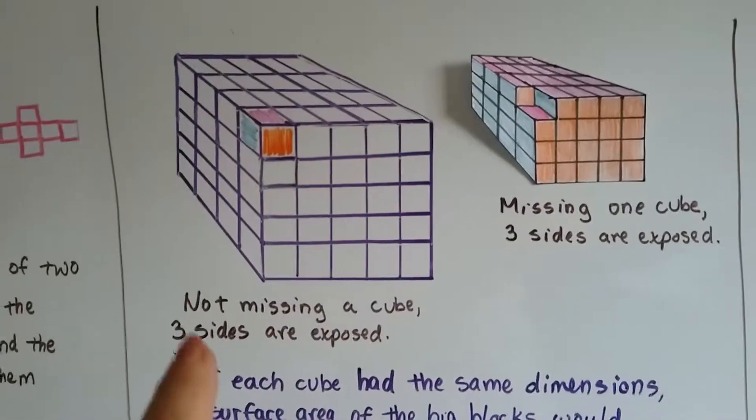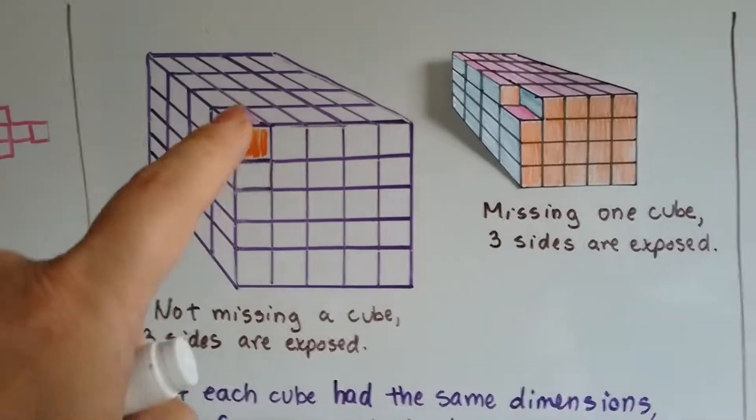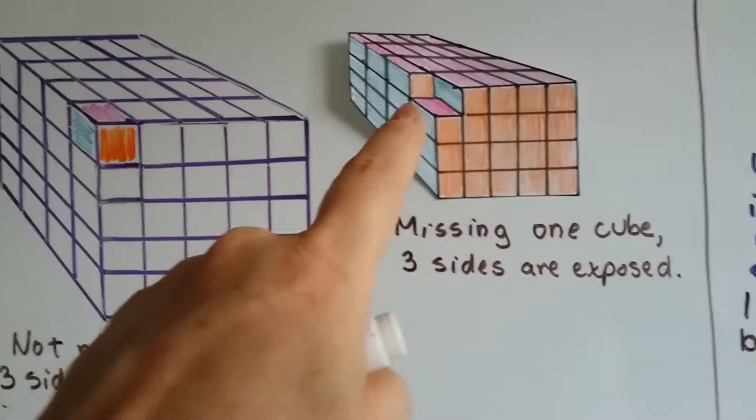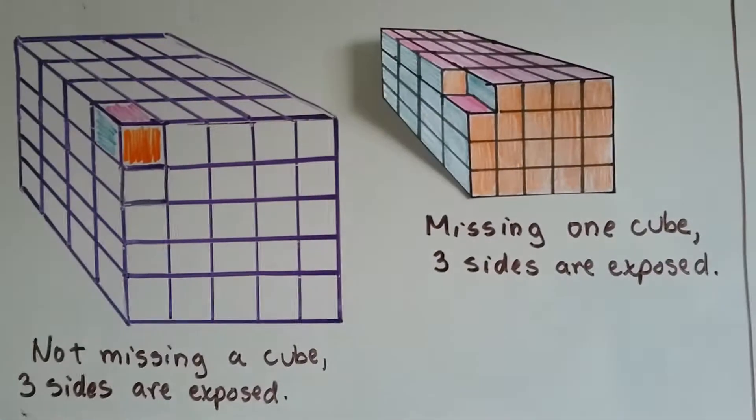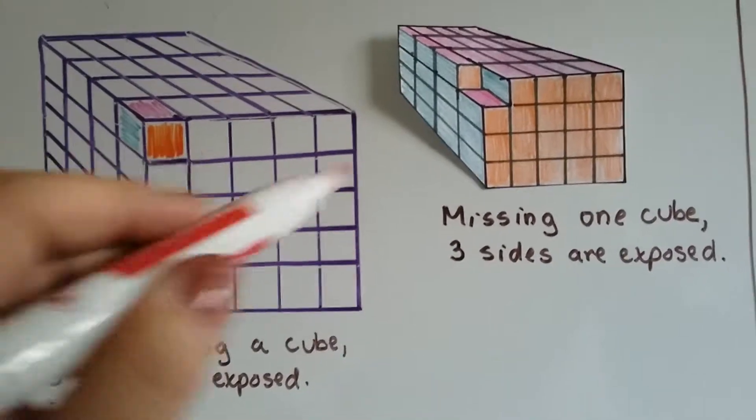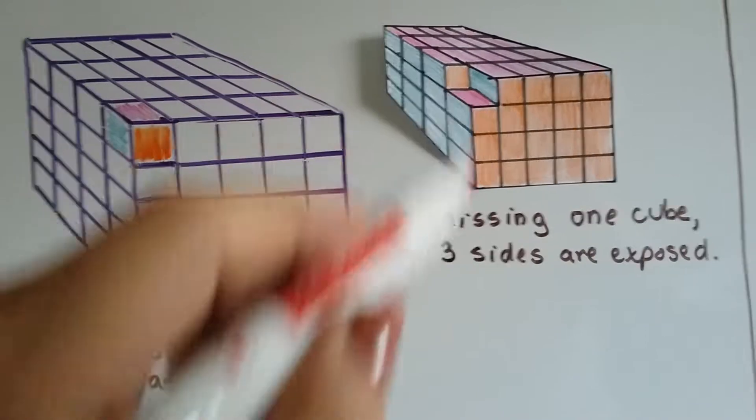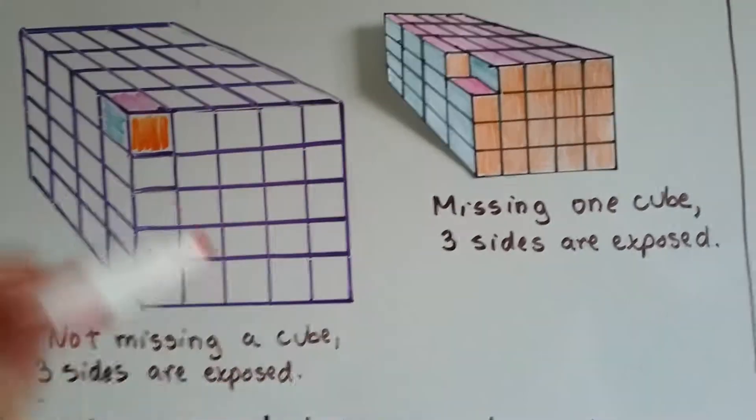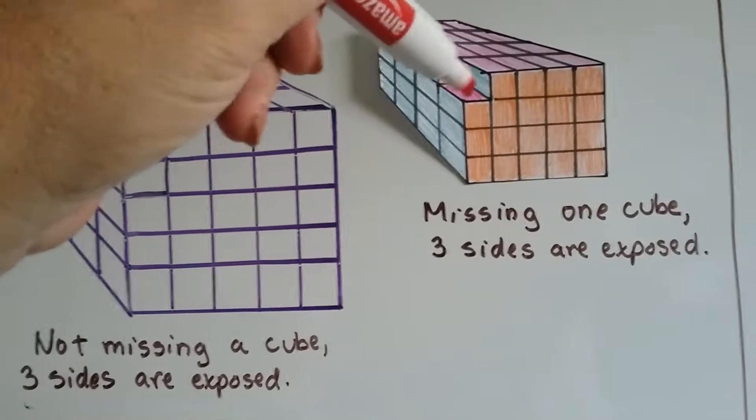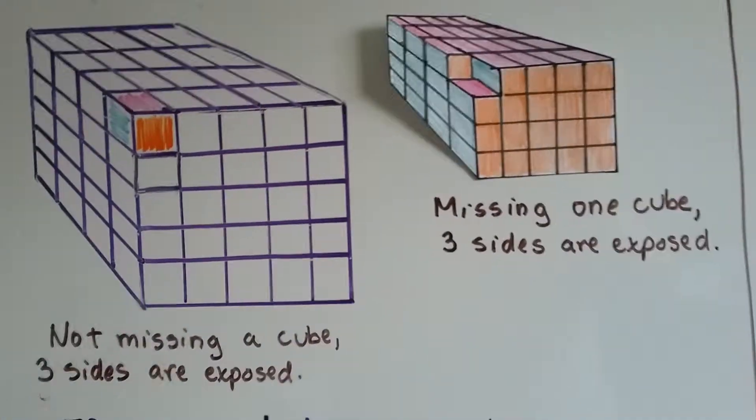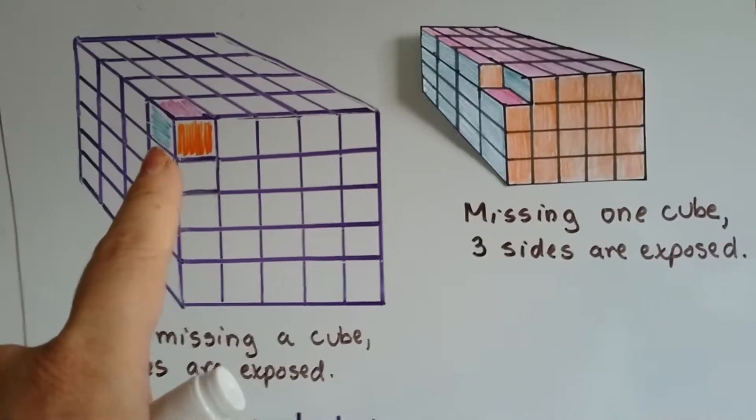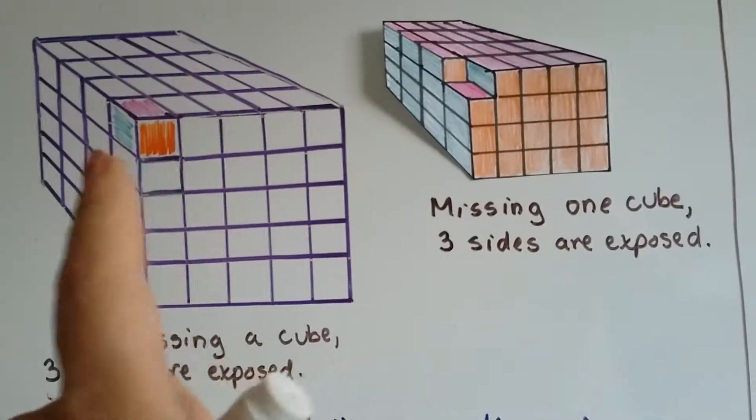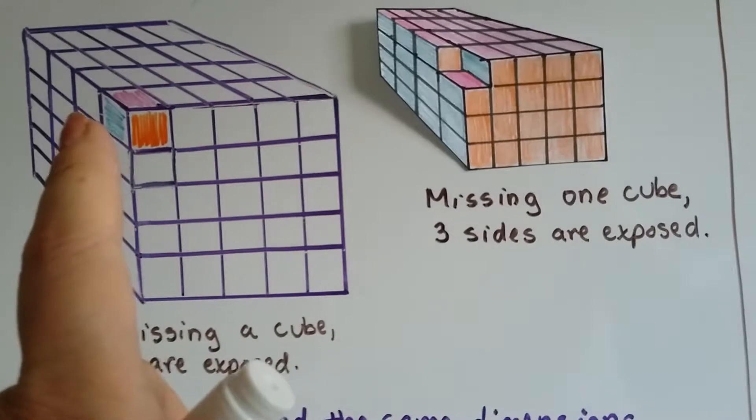But if you look at both of these, this one's not missing a cube and three sides are exposed. This one's missing one cube and three sides are exposed. This one has an orange face, this one has an orange face there. This one has a blue side, this one has a blue side showing there. This one has a pink top showing, that one has the pink top showing. So even though this one is not missing a cube and this one is, they have the same surface area because the same lateral surfaces are showing.